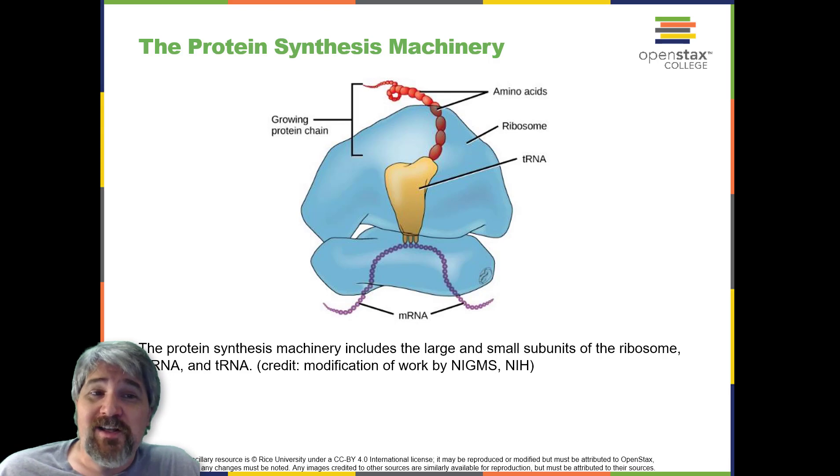A ribosome is a complex macromolecule composed of structural and catalytic ribosomal RNAs and many distinct polypeptides. In eukaryotes, the nucleolus is completely specialized for the synthesis and assembly of ribosomal RNAs.